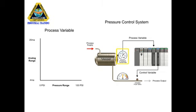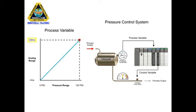The pressure transmitter, identified as the process variable, converts 0 to 100 psi to a 4 to 20 milliamp signal. With a linear relationship, 0 psi measured at the transmitter produces a 4 milliamp signal, and at 100 psi a 20 milliamp signal is produced.